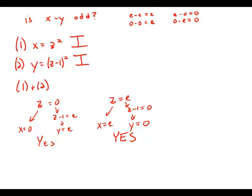So whether z is even or odd, it will lead to values of x and y that give a yes answer to the question. So combined, we can give a resounding yes answer to the question. Combined, the statements are sufficient. And the answer to the entire question is C.